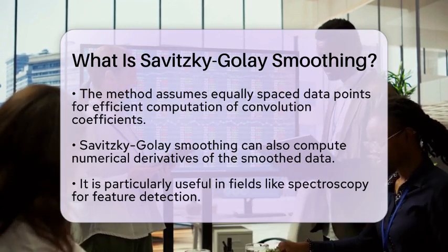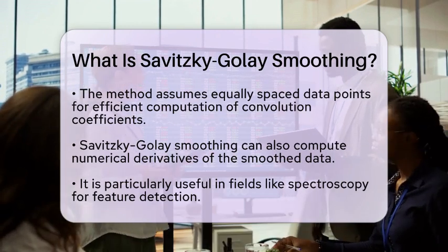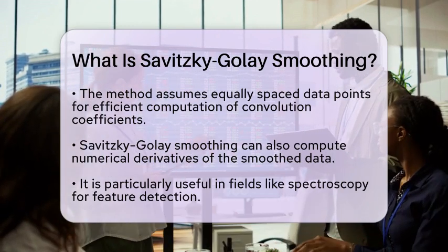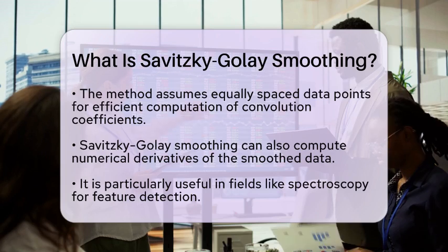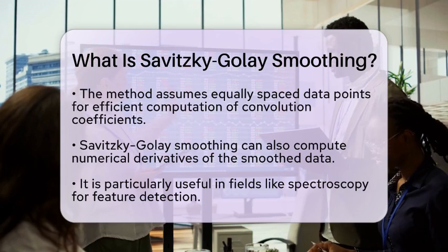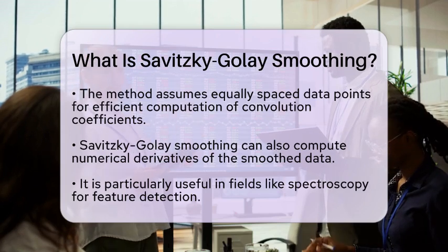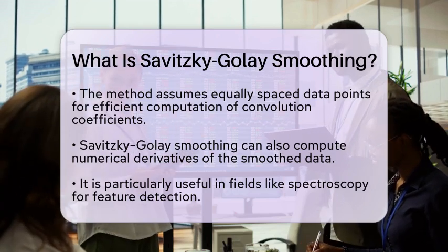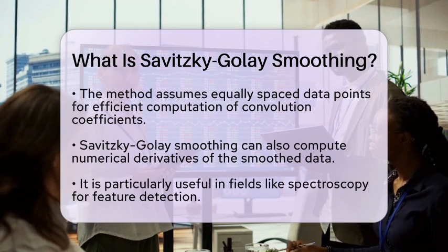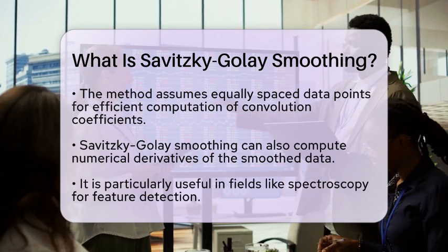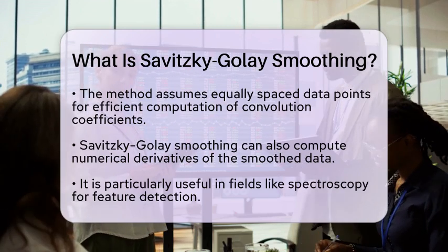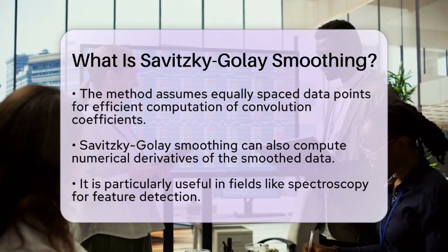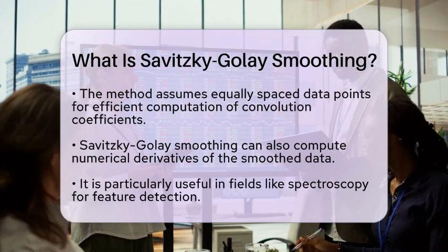Compared to simpler methods like moving averages or Gaussian filters, Savitzky-Golay smoothing is better at preserving peak heights and sharp features. This is critical in measurement data, as these features often carry essential information.